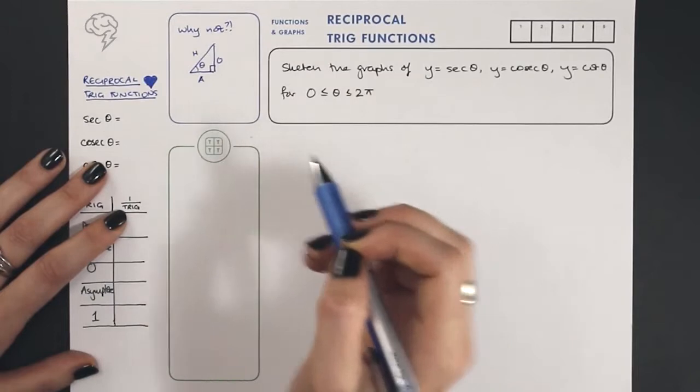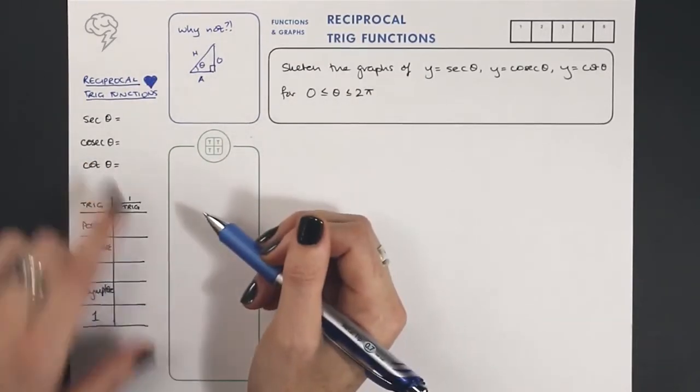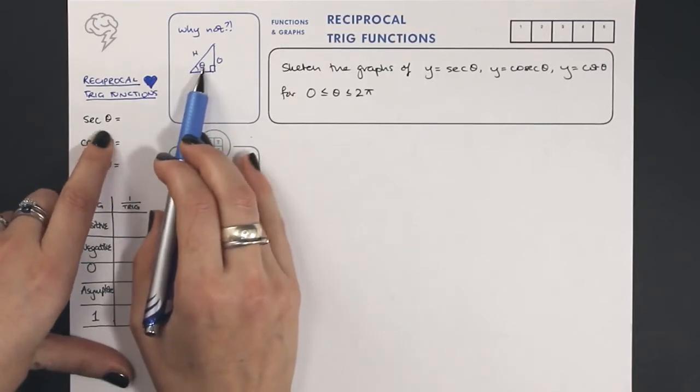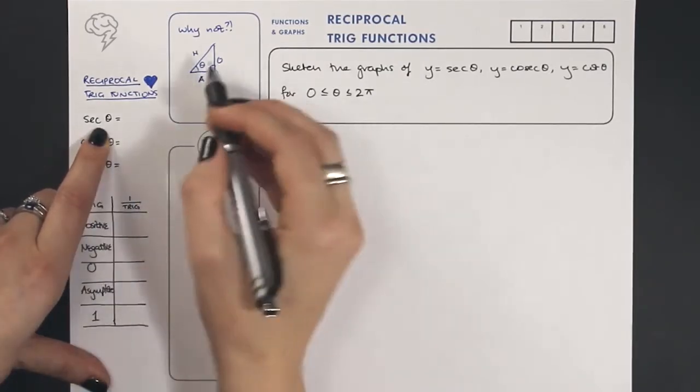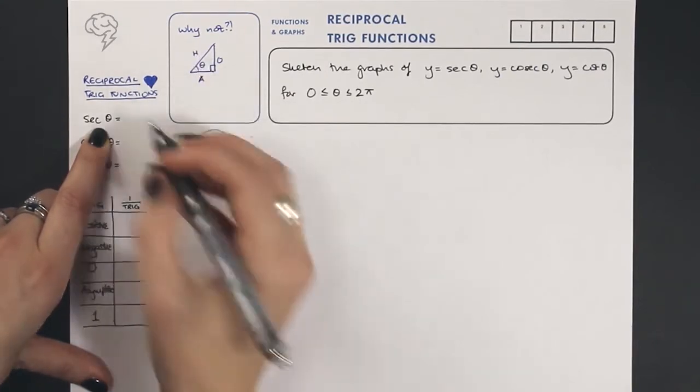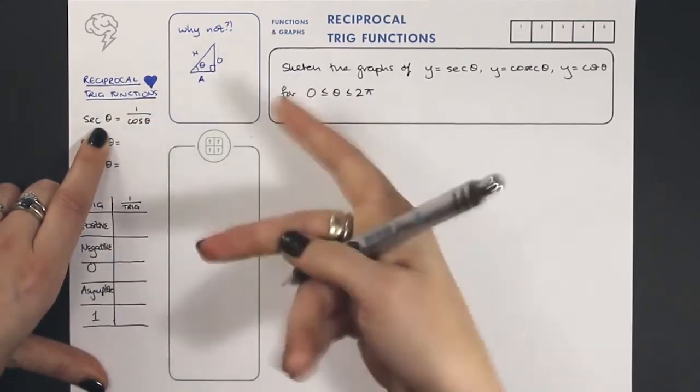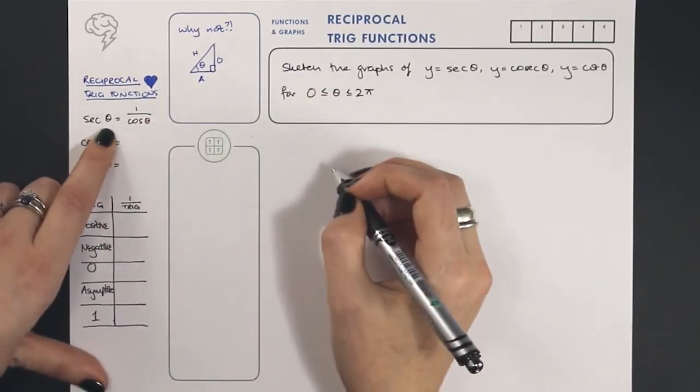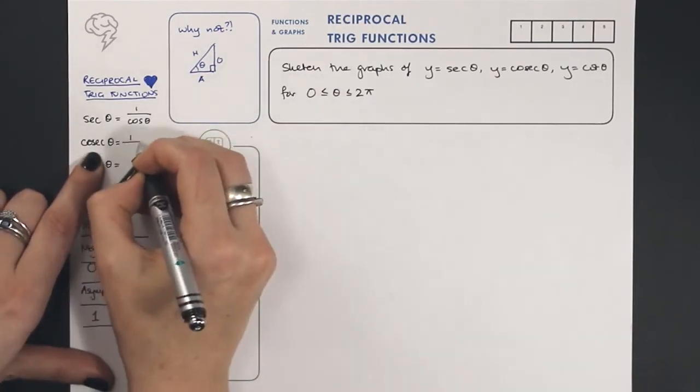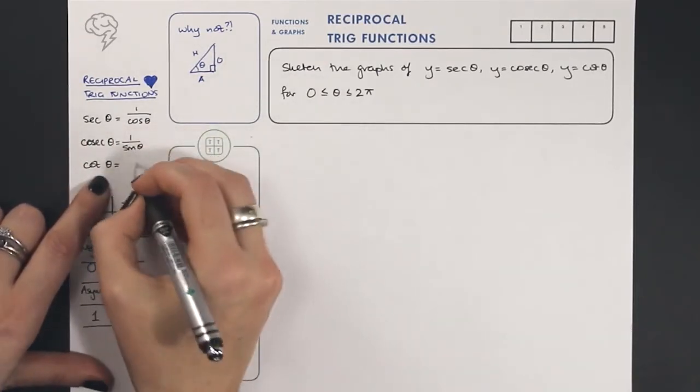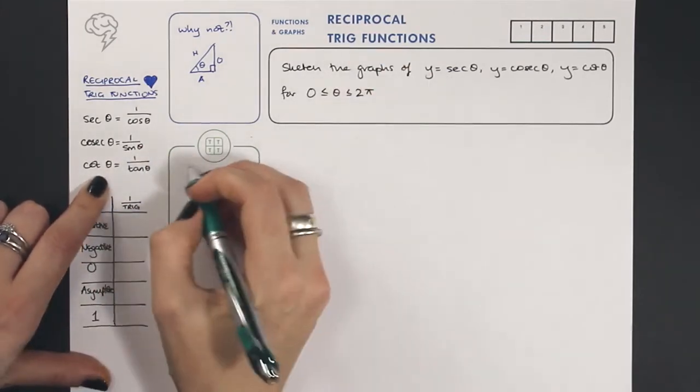So the reciprocal trig functions make just as much sense as the original trig functions. Sec theta is, instead of cosine, which is the adjacent over hypotenuse, sec theta is going to be the reciprocal, not the inverse. So sec theta is one over cos theta. Cosec theta is one over sine theta, and cot theta is one over tan theta.